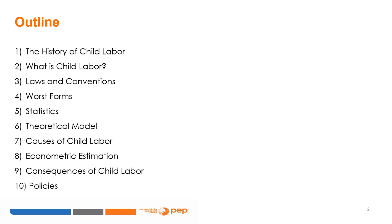The outline of the course includes: 1. The history behind the work of children; 2. The definition of child labour; 3. The laws and international conventions regarding children working; 4. The worst forms of child labour; 5. Statistics estimating the number of children working and those working in hazardous activities; 6. A theoretical time allocation model; 7. The causes of child labour; 8. Econometric estimation; 9. The consequences of child labour; and 10. The policies implemented to mitigate or eliminate child labour.